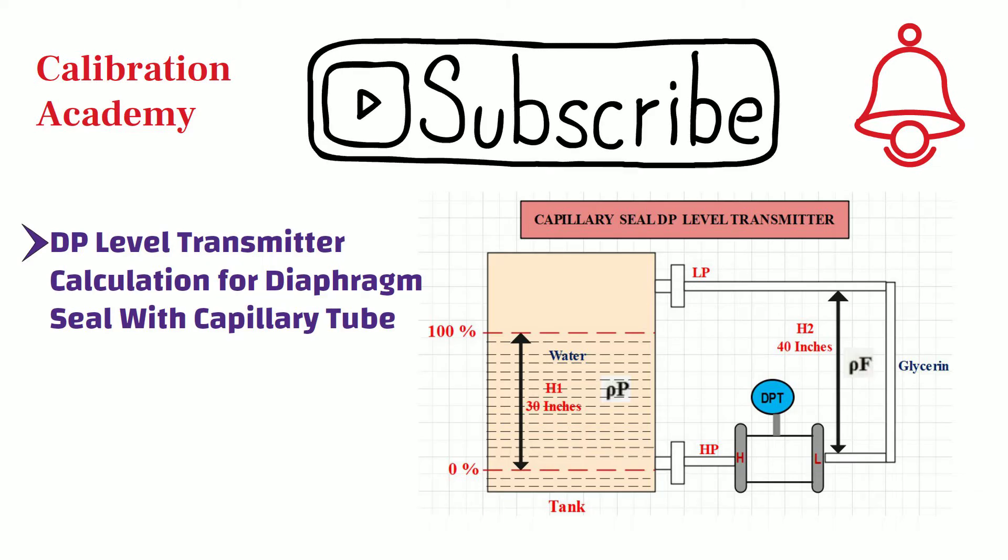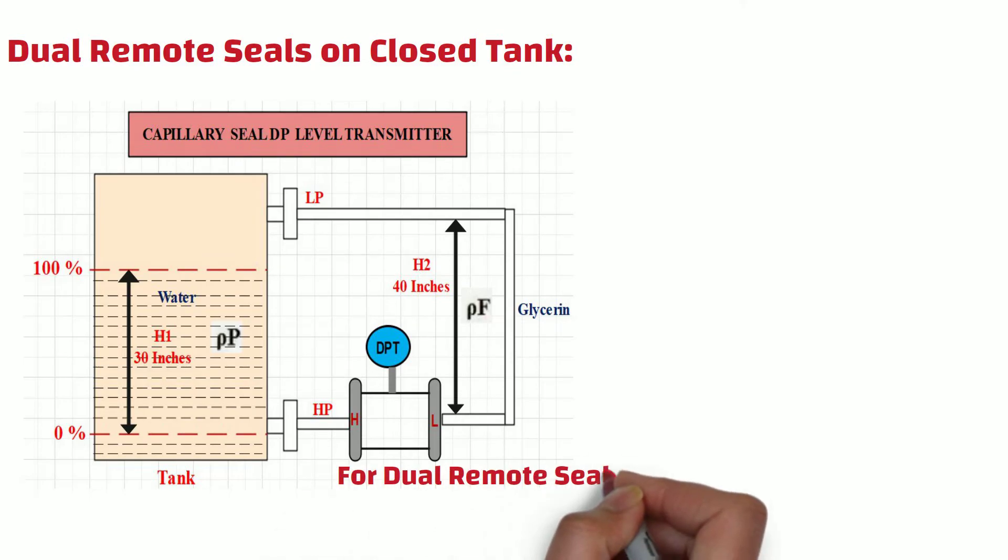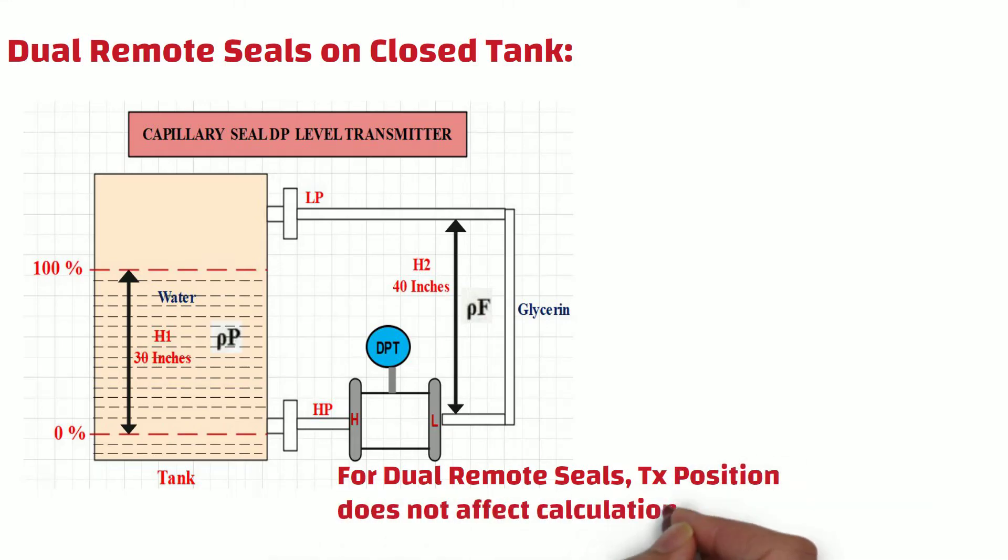Now, let's go to the calculation. As you can see from the diagram, this is an example of dual remote diaphragm seal on a closed tank. First of all, it is important to understand that the transmitter position does not affect the calculation when dual remote seals are used. In other words, it does not matter whether the transmitter is at, below, or above the bottom tap when dual remote seals are used. The LRV and URV are the same for all three conditions.